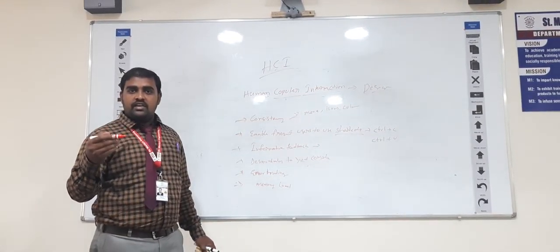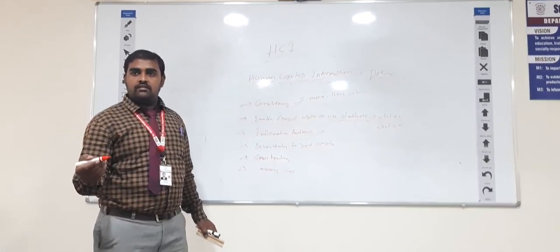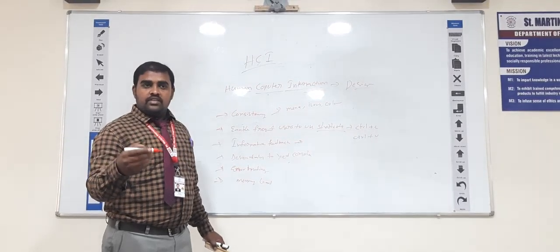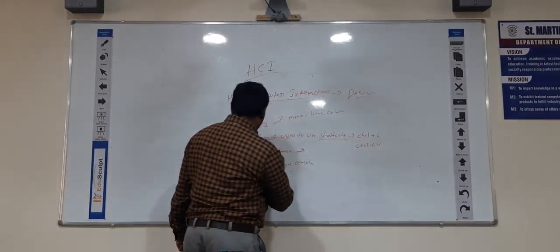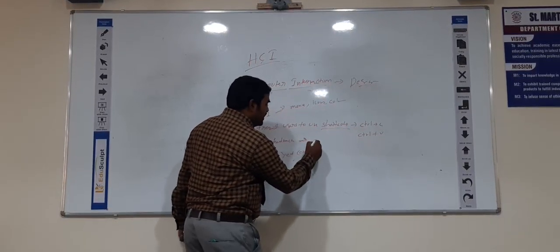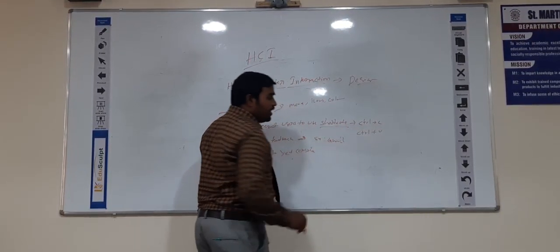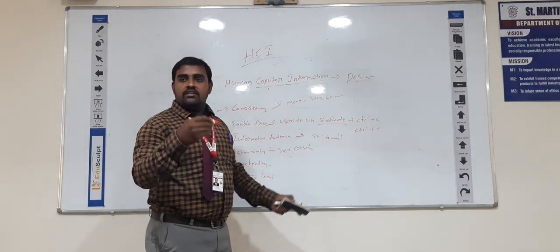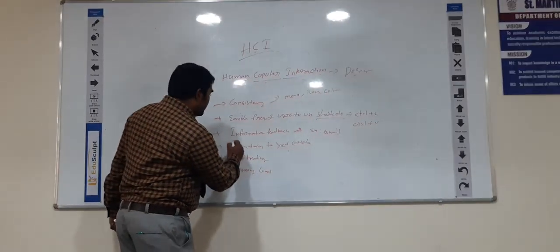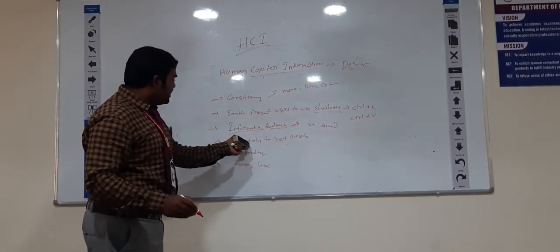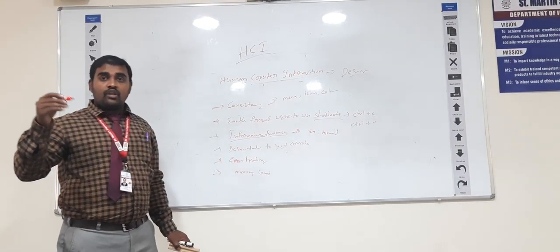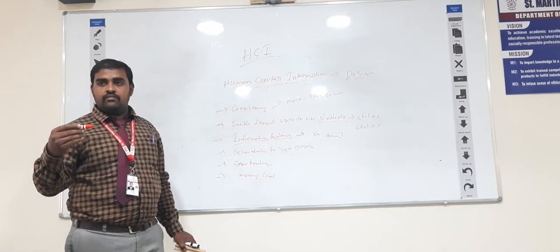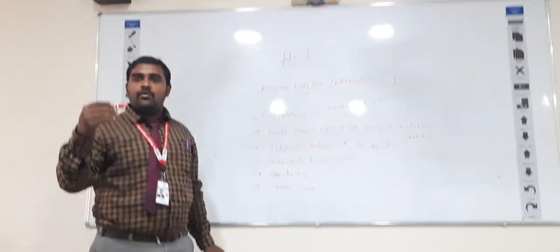Next one is informative feedback. That means suppose we are sending any message to someone, then you get a result — what is the result? Whether the message is sent or not. We can identify the message is successfully sent. The best example is when in a messaging app we send a message, after some seconds it will show you whether the message is delivered. That is called informative feedback.